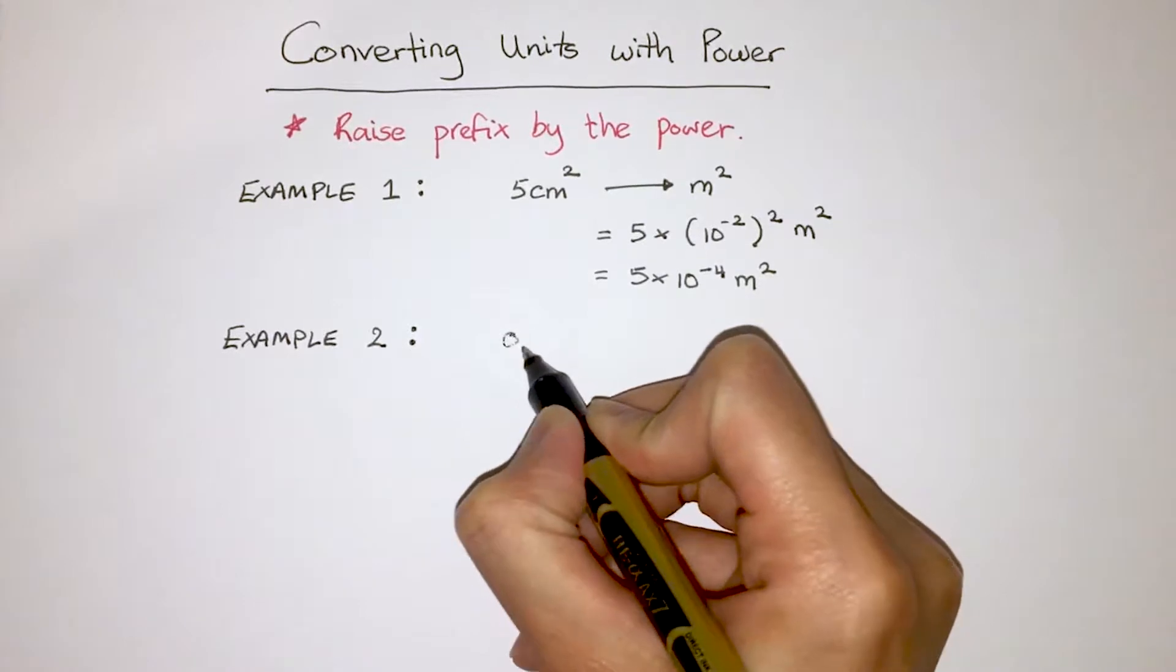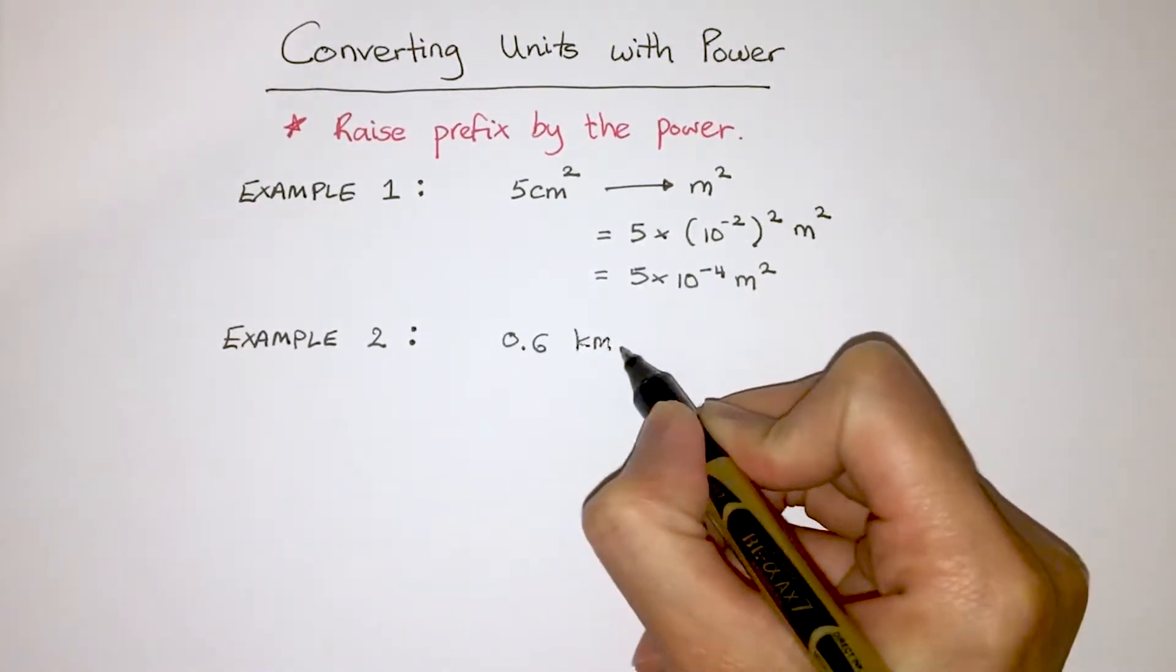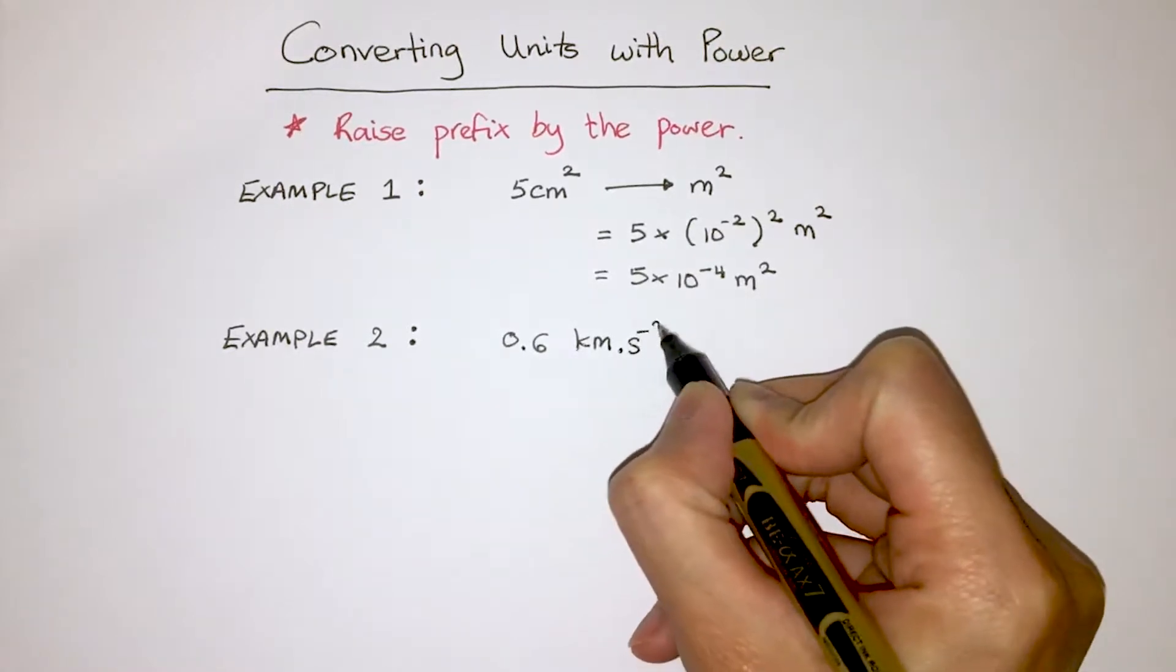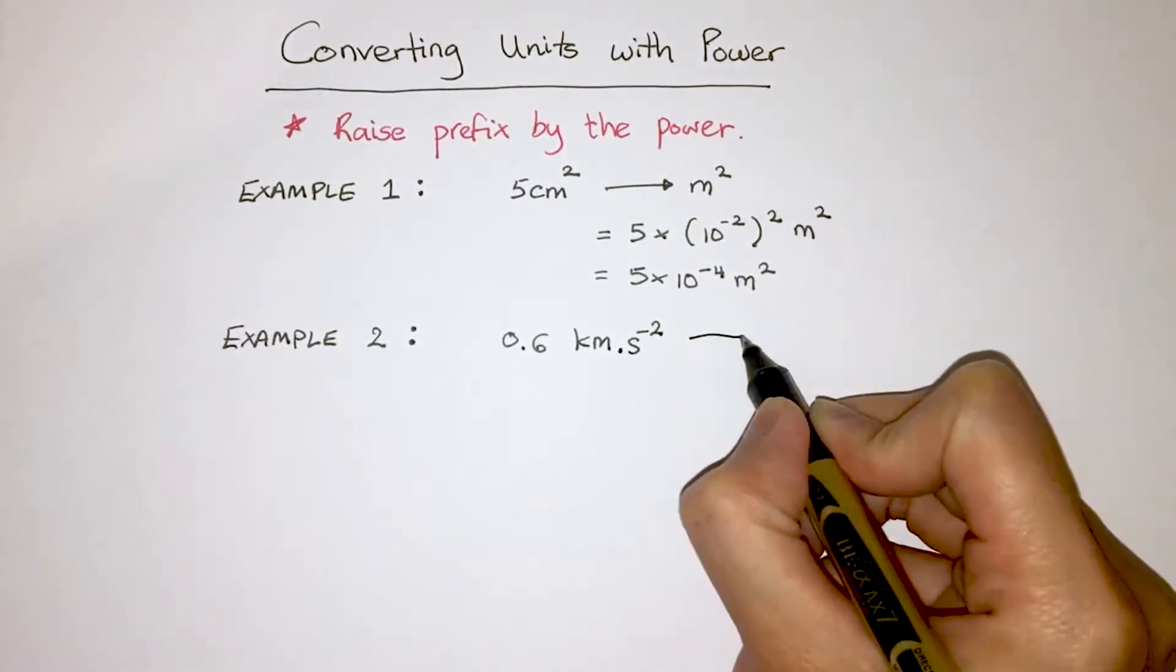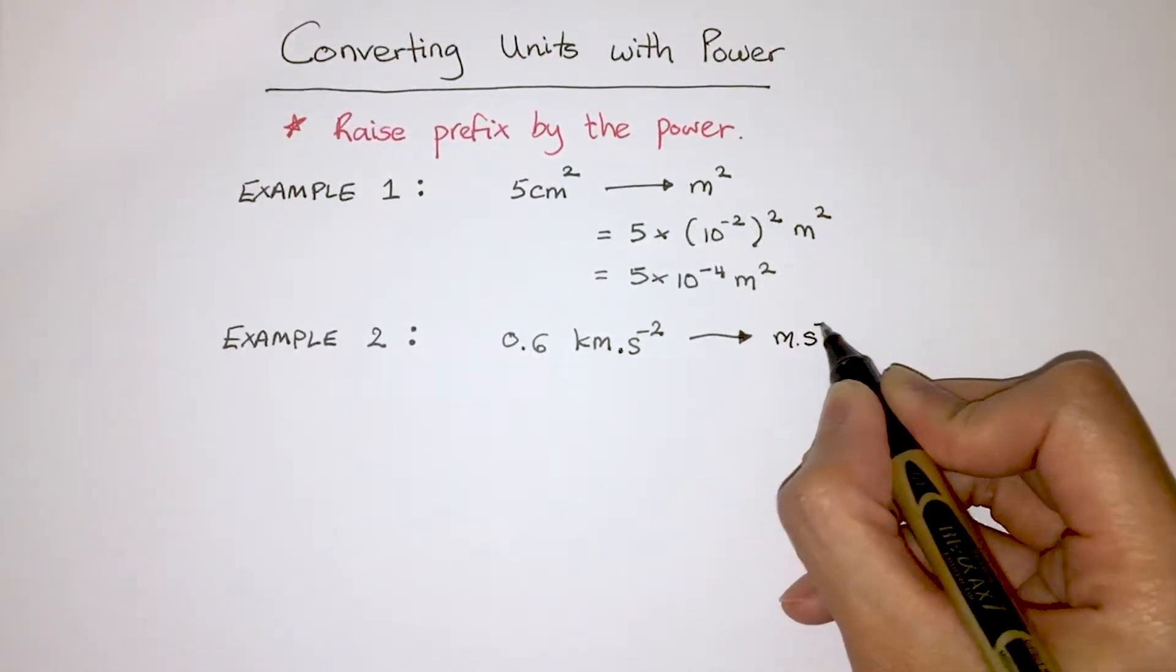Here we have 0.6 kilometer seconds to the minus 2. In other words, this is kilometers per second squared, which is a unit of acceleration.